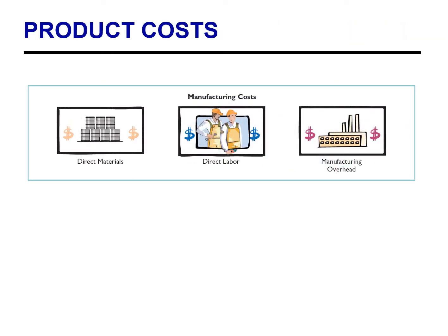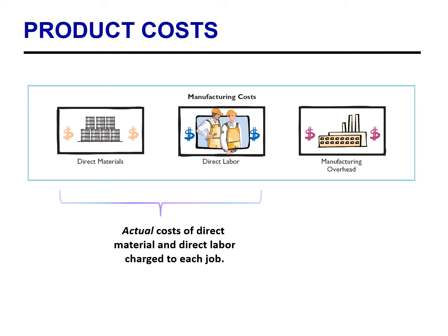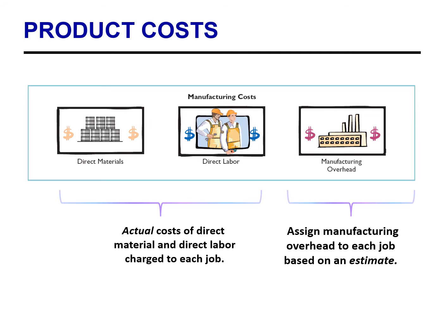Before we discuss the differences between traditional and activity-based costing, let's review some concepts from previous chapters. Using material requisition forms and payroll timesheets, it's fairly easy to trace direct materials and direct labor costs to the product. Overhead costs, on the other hand, are an indirect or common cost that generally cannot be easily or directly traced to individual products or services. Instead, companies use estimates to assign overhead costs to both products as well as services.